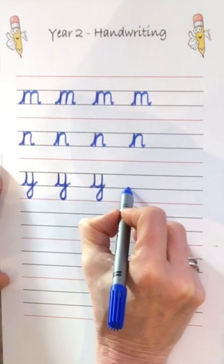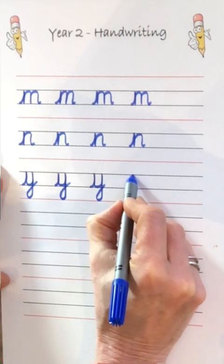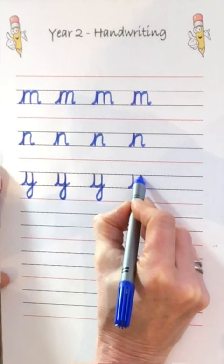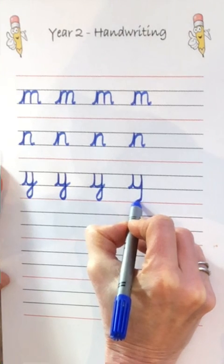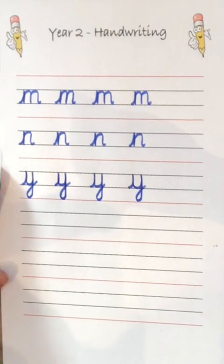One more time. Go up to the first grey line, scoop round, all the way to the grey line again, come straight down, scoop round. Well done.